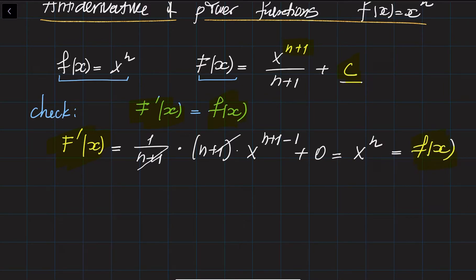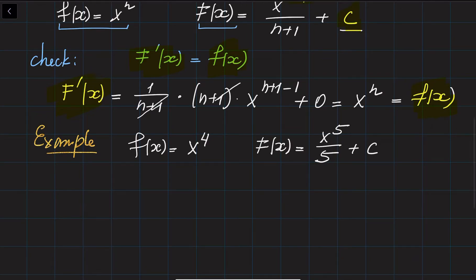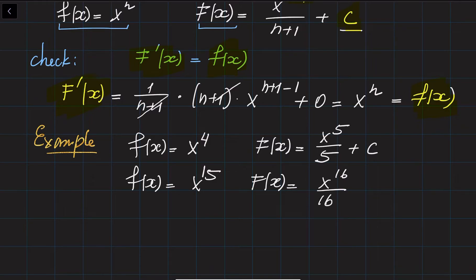Let's do a couple of examples of how this formula works. If f of x equals x to the power of 4, then its antiderivative is x to the power of 5 divided by 5, plus some constant C. Another example: if f of x equals x to the power of 15, then its antiderivative is x to the power of 16 divided by 16, plus a constant.